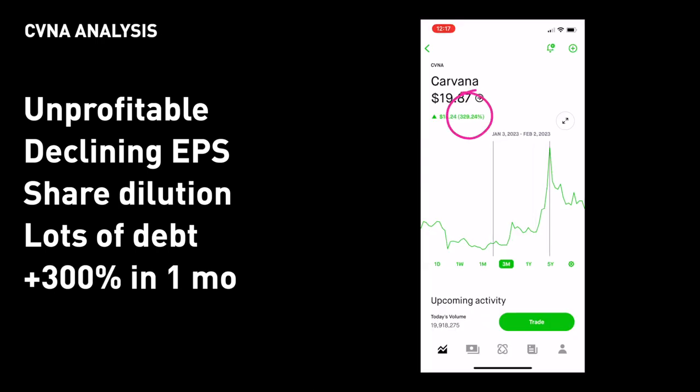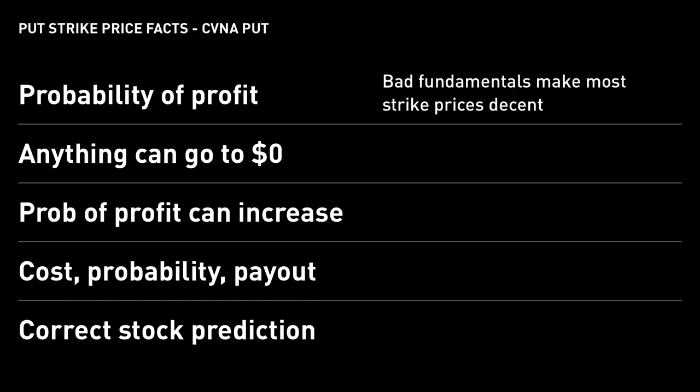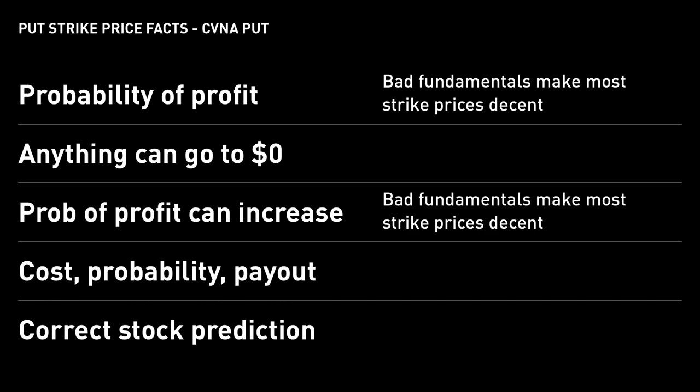Most importantly, Carvana surged over 300% in one month, so I definitely think at that point in time it was very overvalued. If we map my Carvana put to all five facts about strike prices, here's what it looks like. For fact number one — probability of profit — I've done my research. I know Carvana has bad fundamentals, so time will eventually correct the stock. That's why I chose an expiration date in June, so I have a few months to wait for it to correct. Therefore, no matter which strike I pick, my probability of profit should be pretty high based on that analysis. And that reasoning also maps to fact number three — I don't need to go too high of a strike or too deep in the money, because the bad fundamentals already give me a pretty good chance of winning even at an at-the-money or slightly out-of-the-money strike.